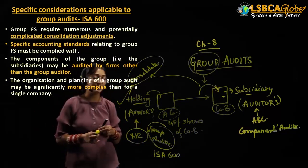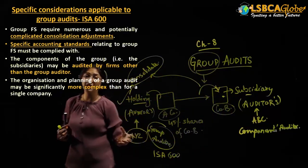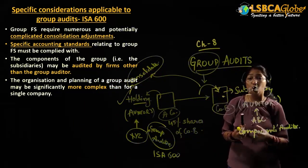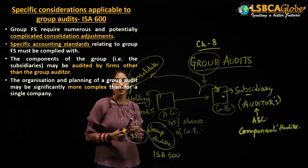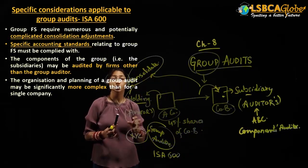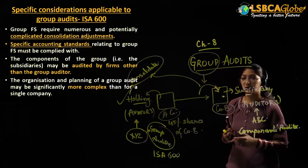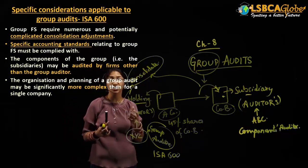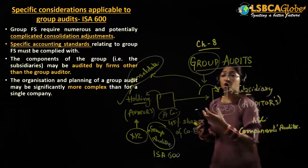The second extra consideration is that in the case of group audits, there are various accounting standards which are applicable only in the case of group audits and not applicable in the case of single company books. As an auditor, you have to know what those accounting standards are and how you are going to comply with them. Before accepting a group audit, you have to know both the consolidation adjustment entries and the accounting standards that are applicable specifically to the group company.